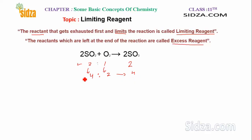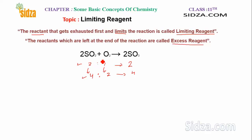In both cases the simplest whole number ratio between the reactants is the same — SO2 to O2 is 2:1, and 4:2 also simplifies to 2:1. When the reactants combine in the ratio found in the balanced equation, at the end of the reaction you only get product with nothing left over.